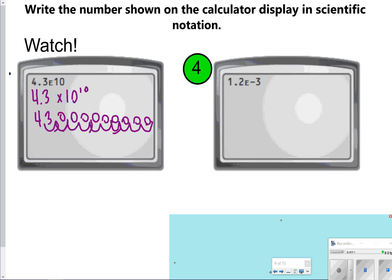This one you're going to try. So notice it says 1.2e to the negative third. So if positive numbers go to the right, think about where negative numbers go. Go ahead and pause the video here to see if you can try number 4. And then once you're done, click play to check your work.